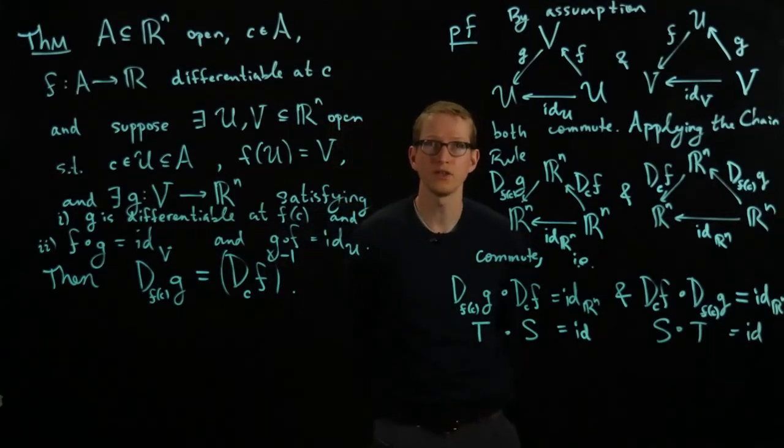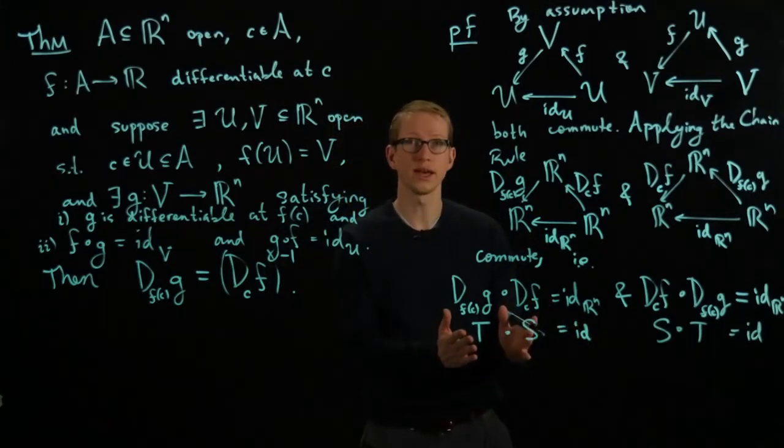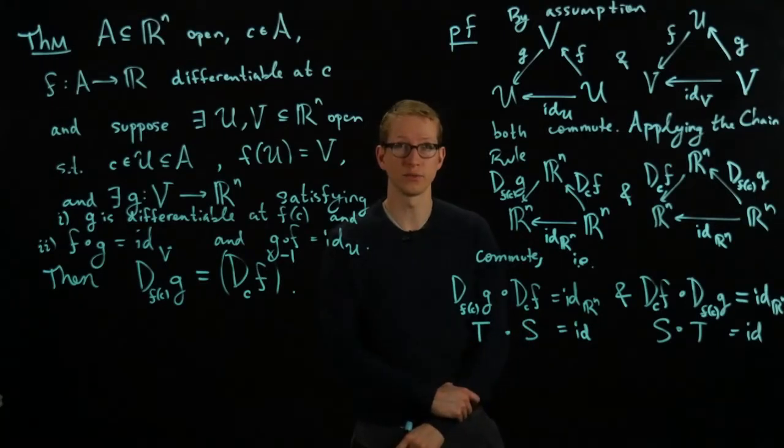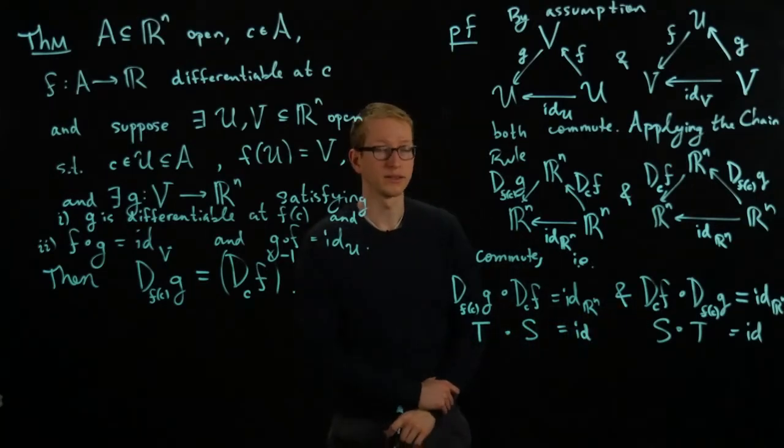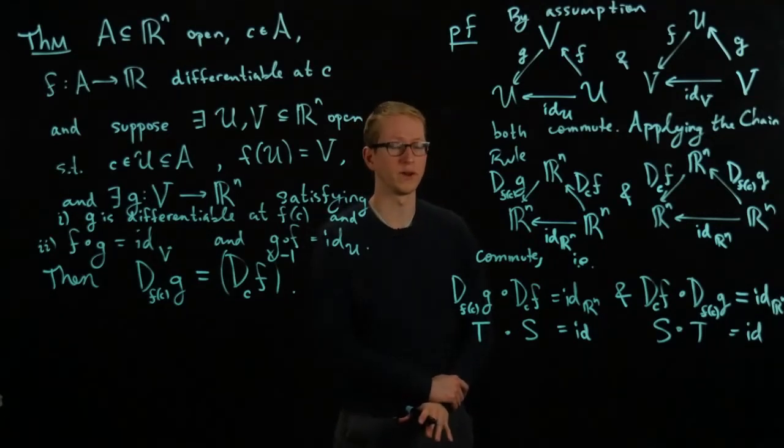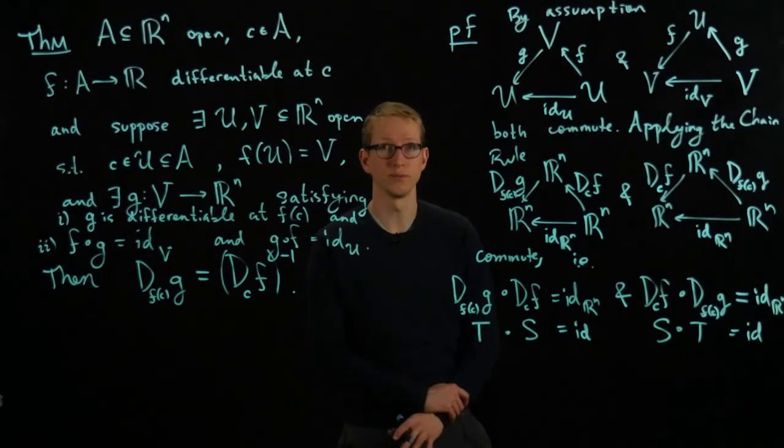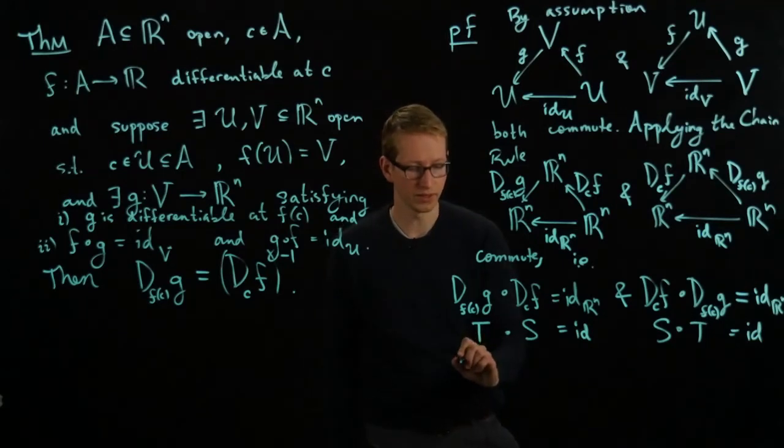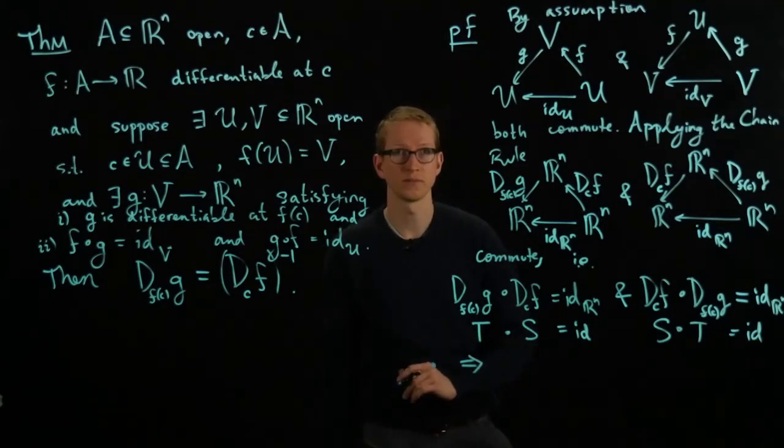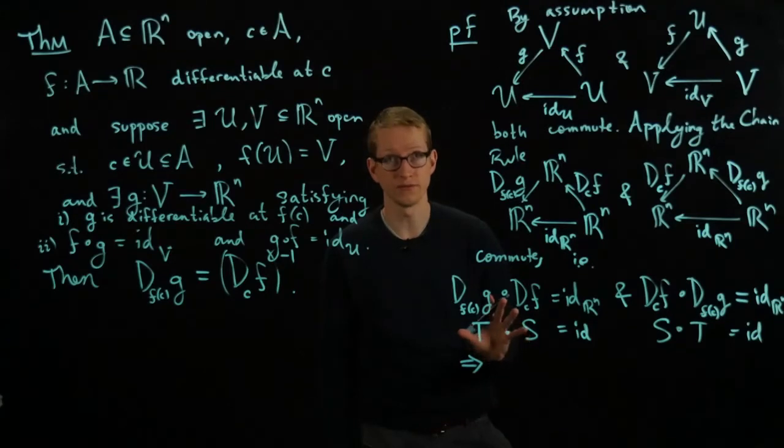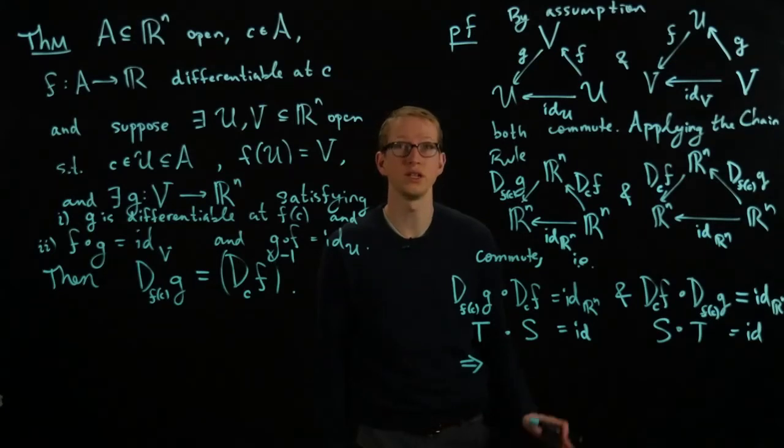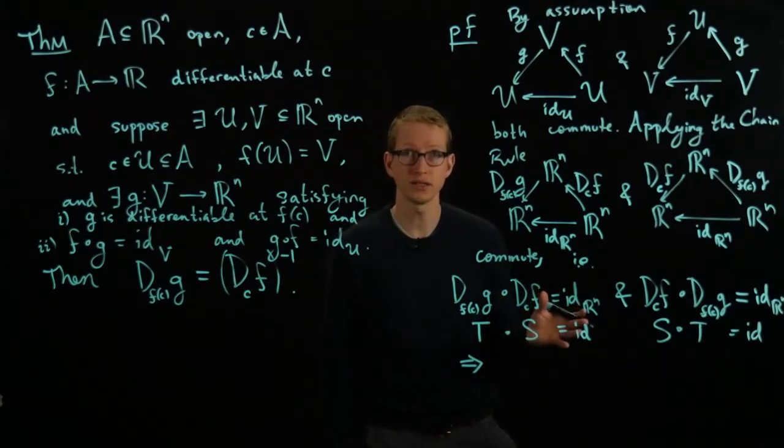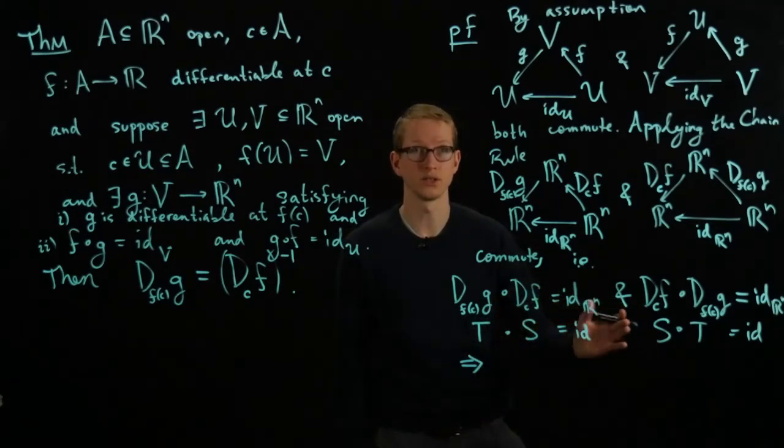So what we have is two linear transformations such that when we compose them in this order give us the identity transformation in both directions. This is equivalent to the definition of a linear transformation being an isomorphism, in other words an invertible linear transformation. And because of this, both of these equations, actually technically one of them is sufficient when we're dealing with finite dimensional linear transformations between vector spaces of finite dimension. If we're dealing with infinite dimensional vector spaces then both of these conditions will be required.